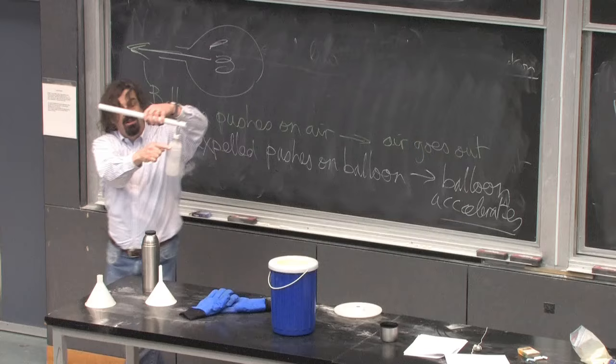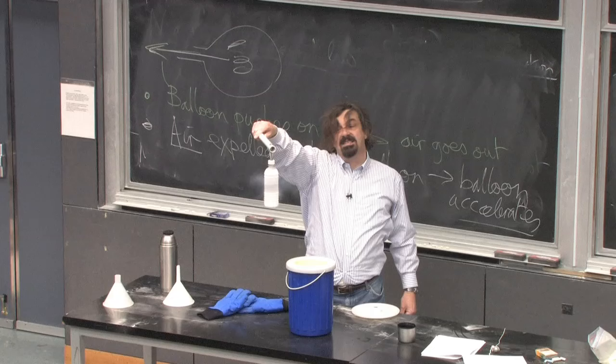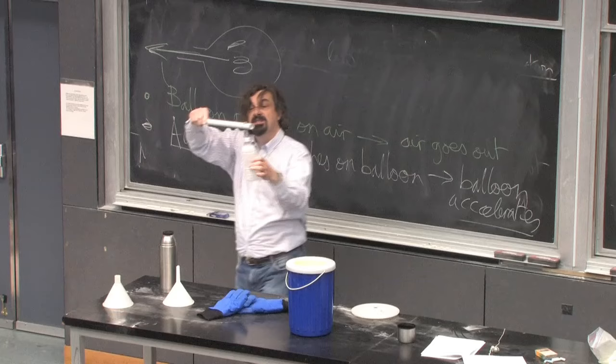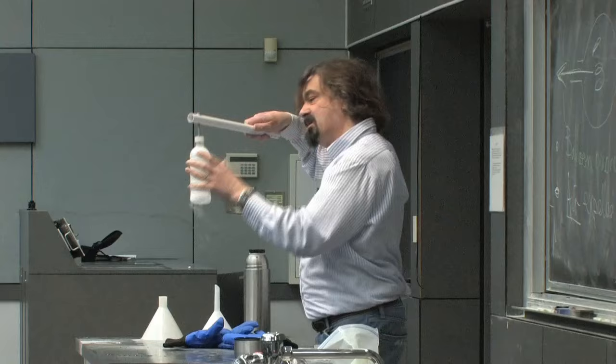So what's happening? High pressure in here. The pressure inside forces the gas out, and the Newton's third law reaction force pushes the cylinder in the opposite direction, causing it to spin. There's a force of this plastic bottle on the gas going out, and there's a Newton's law force of the gas on the bottle spinning it in the other direction. And I have a jet engine here.